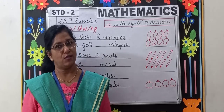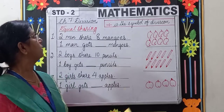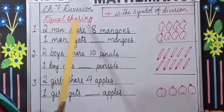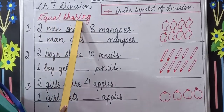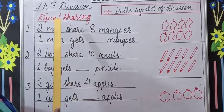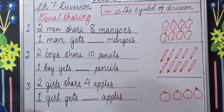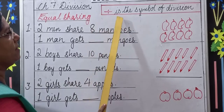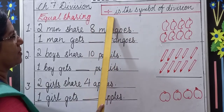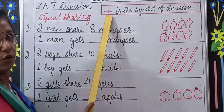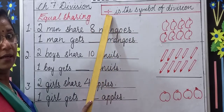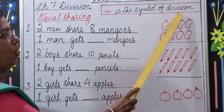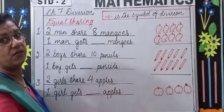Let's go to the topic. Here we have equal sharing. Examples are given and the symbol is this — we call it 'divided by'. This is the symbol of division.